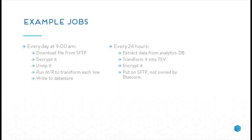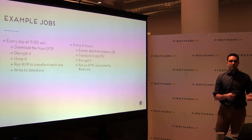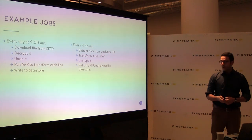Here's an example job we run every day at 9 a.m. for one of our clients: we download a file from SFTP, decrypt it, unzip it, and then run a MapReduce to transform each line and load it into our data store. Another job runs every four hours: we get data from our analytics database, transform it into a format Omniture needs, encrypt it with a configurable public key, and put it on an SFTP not managed by us.